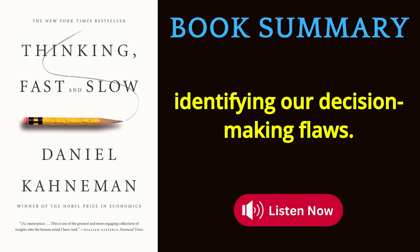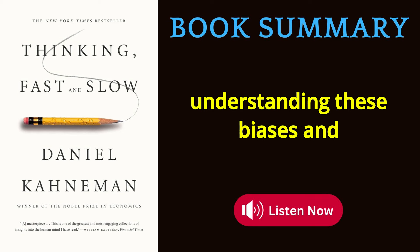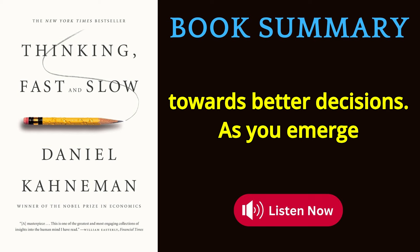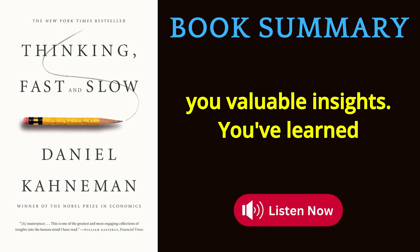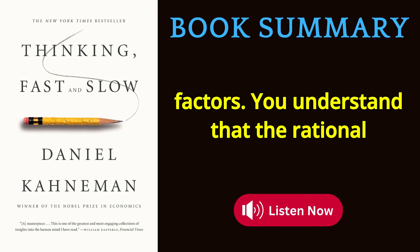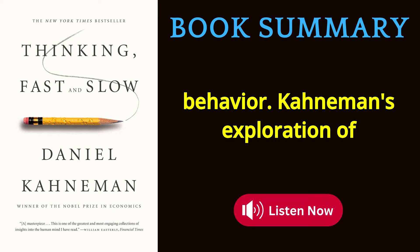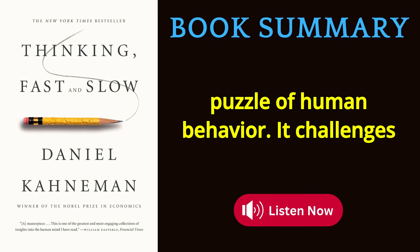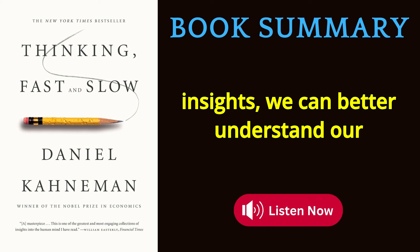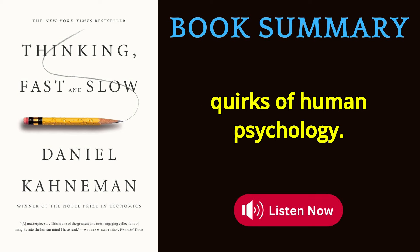Kahneman's exploration of choice is a map for navigating human decision-making. By understanding these biases and tendencies, we can make more informed choices, design better policies, and create environments that nudge people towards better decisions. Our decisions are shaped by a complex interplay of cognitive biases, emotional responses, and contextual factors — and the rational economic model is often a poor predictor of actual human behavior. This offers a more nuanced, psychologically grounded model of decision-making.